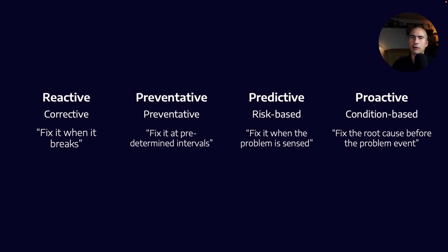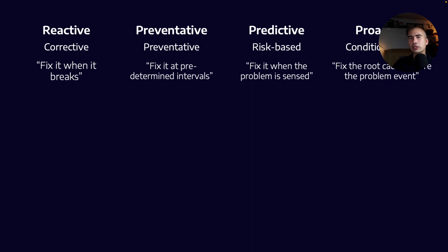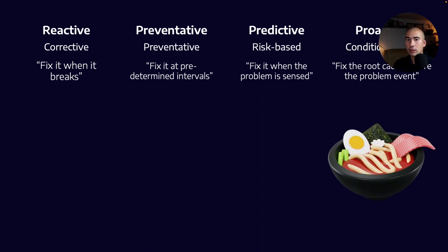We now have four broad definitions: reactive, preventative, predictive, and proactive. It's helpful to use another analogy — lubricant is like the lifeblood of the asset. Let's talk about heart and blood health. What proactive steps would you take to ensure a healthy heart? Proactively, you would eat a healthy diet so what goes into your body is always optimal. In an oil context, that means always putting the correct lubricant into the asset, always filtering it, and making sure it's clean, cool, and dry. That would be an example of proactive use of lubricants.